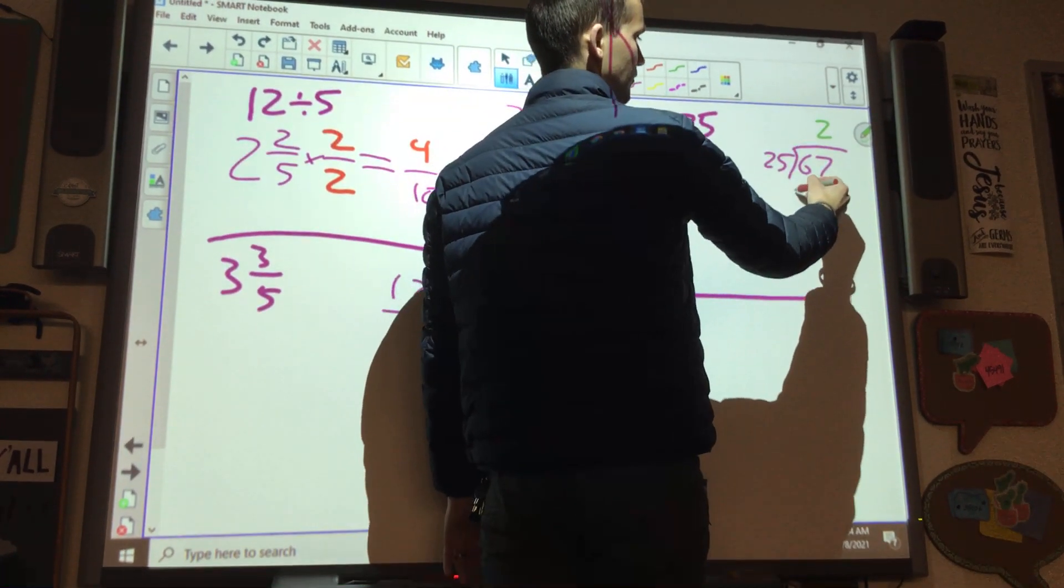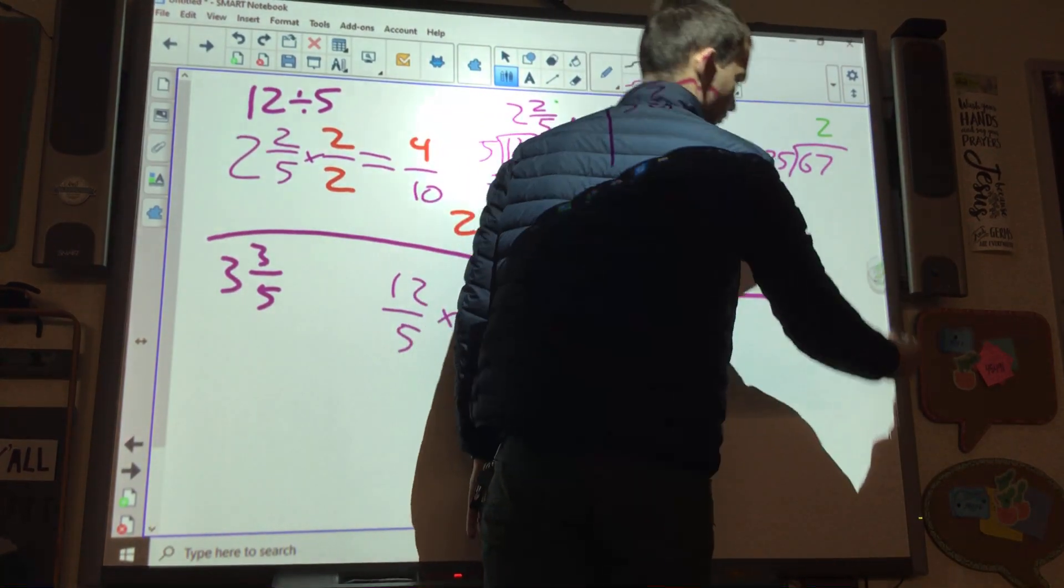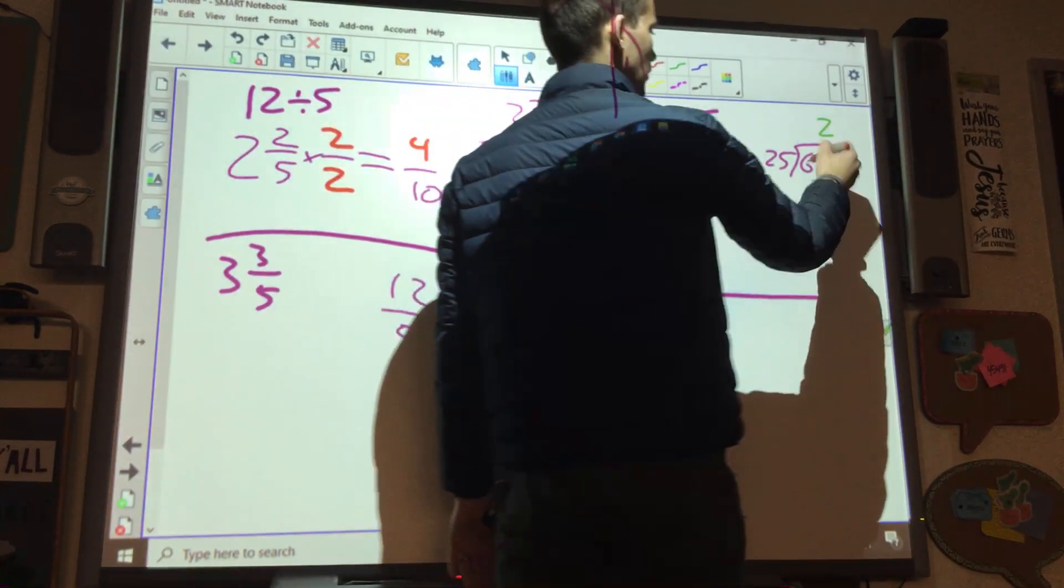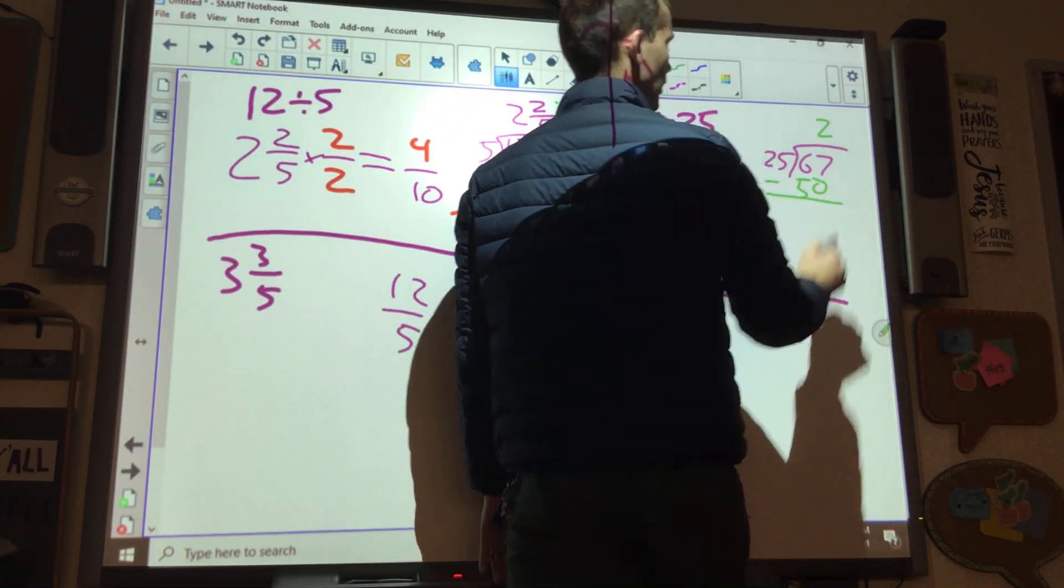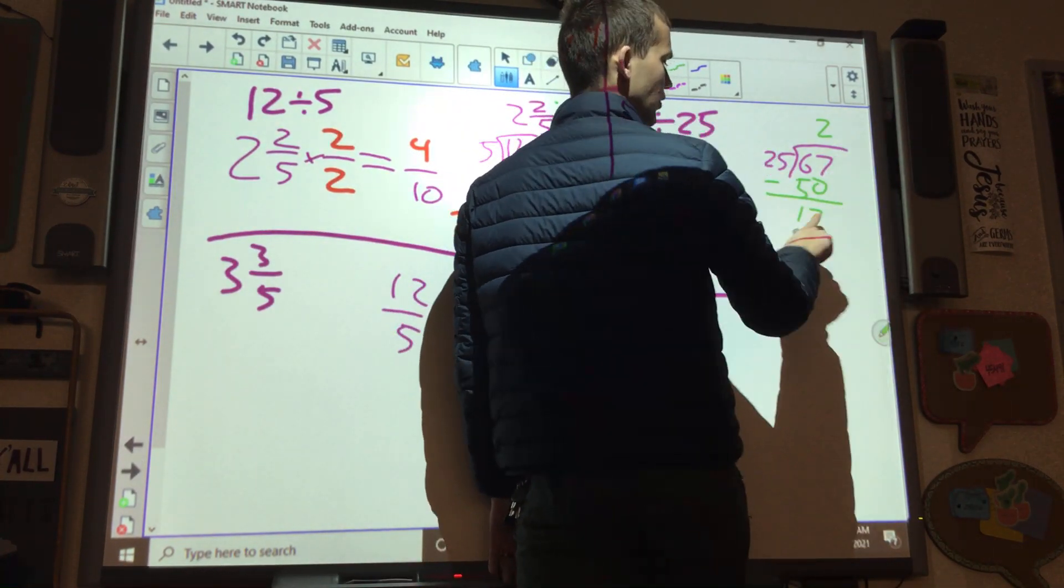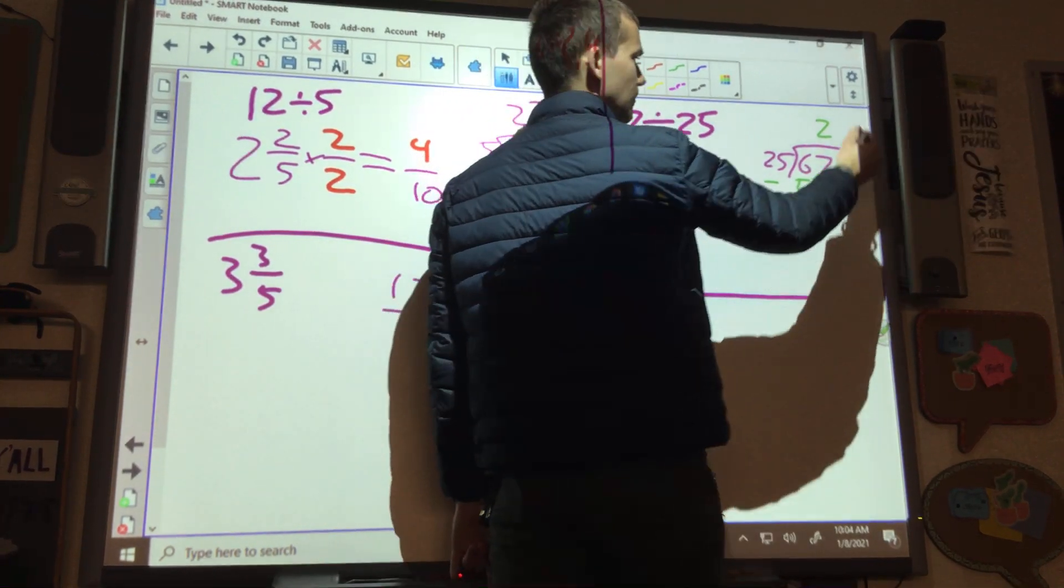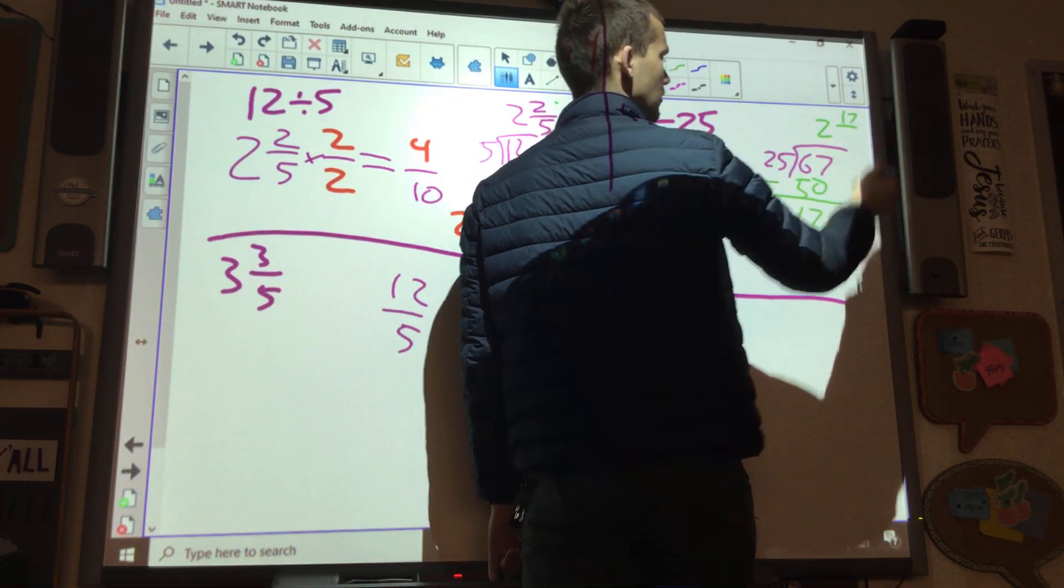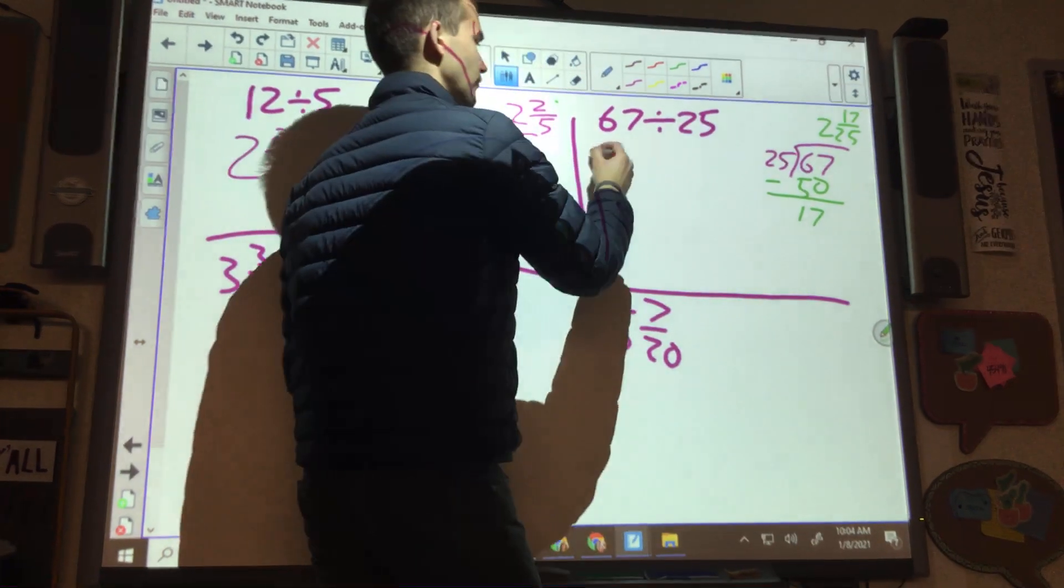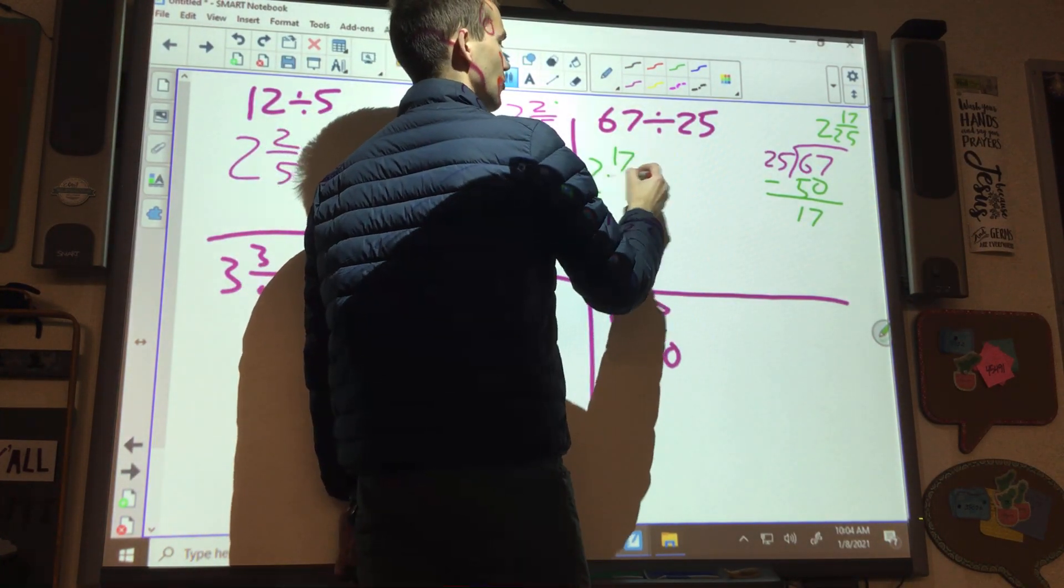2 times 25 is? 2 times what? 2 times 25? 50. Yeah. 50 is subtracted. And we have all my stuff over. 17. 7. So then we, what do we do with the 17? On the top. And 25 on the bottom. So we have 2 and 17 over 25.